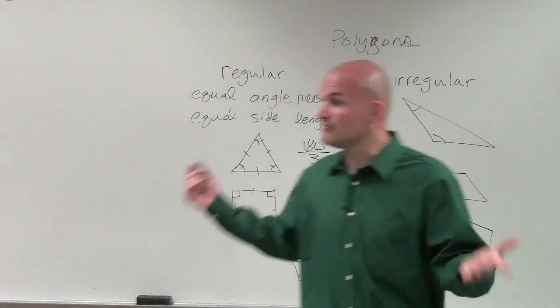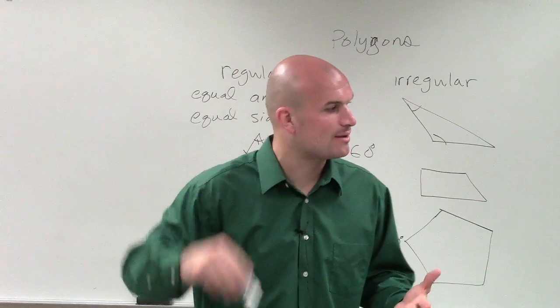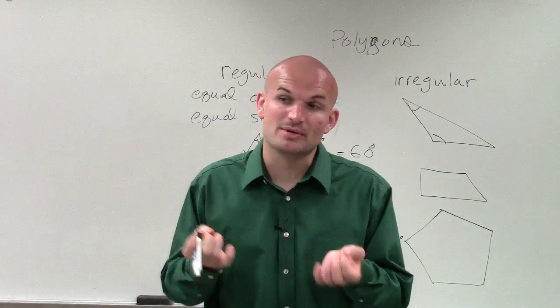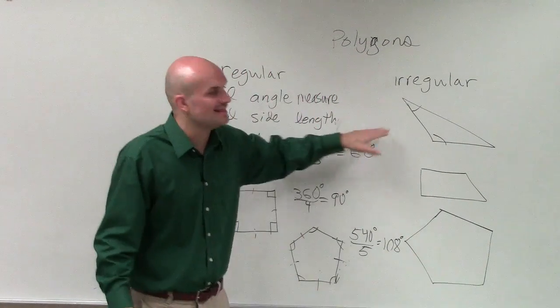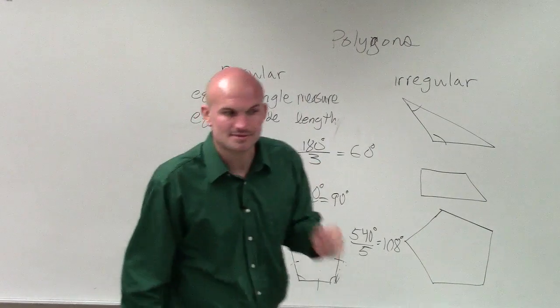So ladies and gentlemen, what I want you guys to understand is this is the measurement of each individual angle. So yes, I might ask you, what is the sum of all angles? That's just n minus 2 times 180. But if you want to find the measurement of an individual angle, you do n minus 2 times 180, and then divide it by the number of sides.